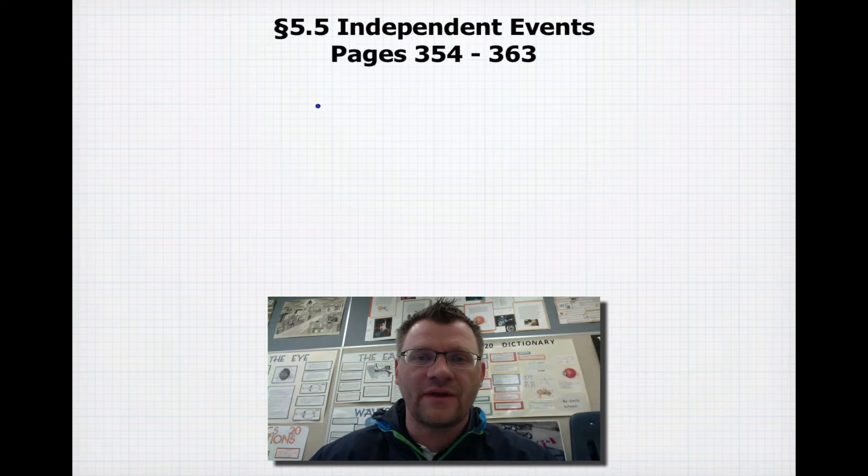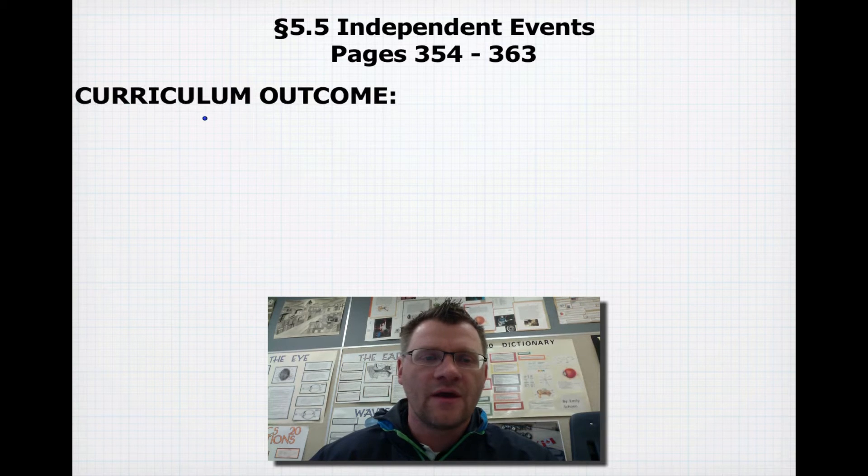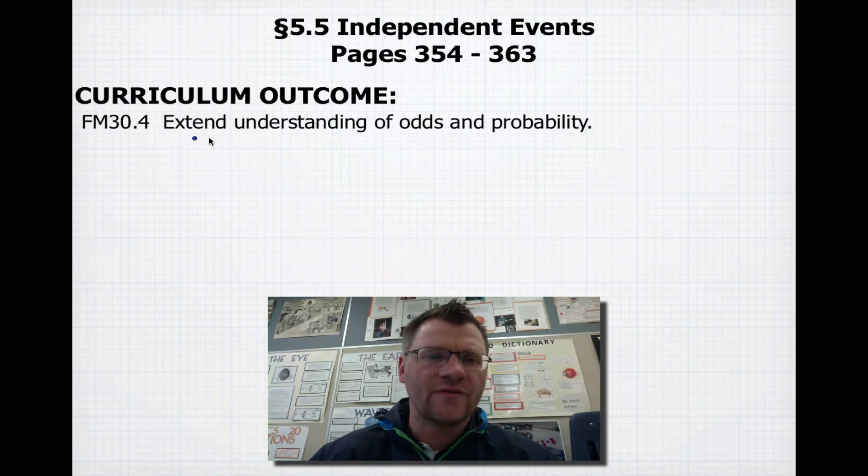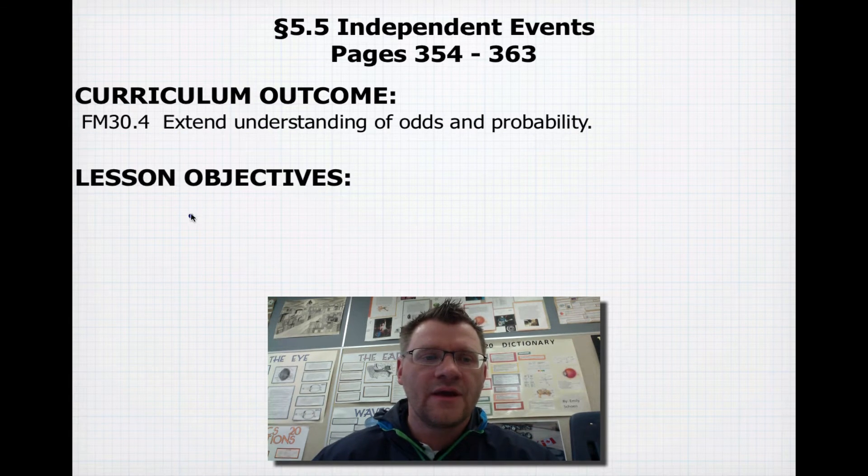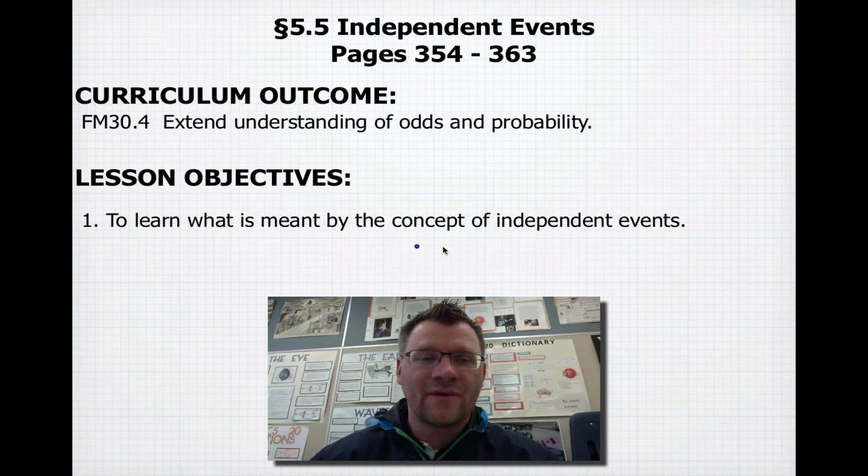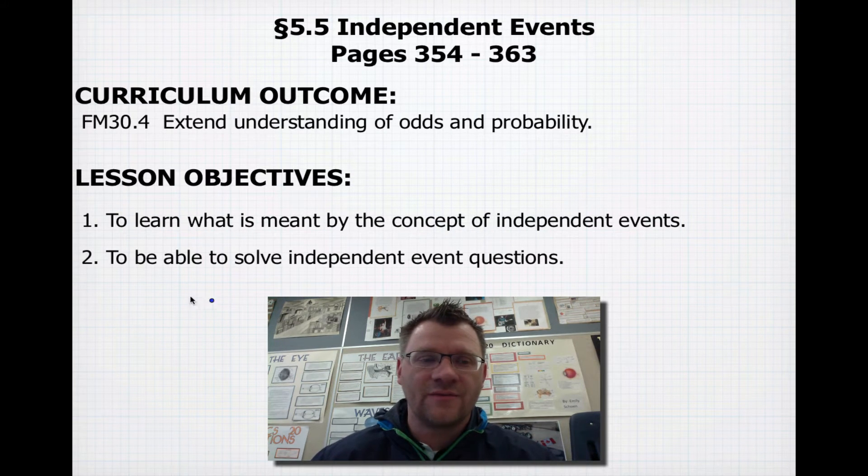So we're looking at 5.5 today, which is independent events, and that's on pages 354 to 363. Our curriculum outcome is to extend understanding of odds and probability. And our lesson objective is to learn what is meant by the concept of independent events, and number two, to be able to solve independent event questions.